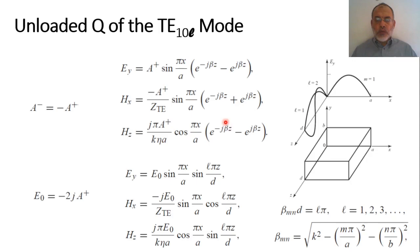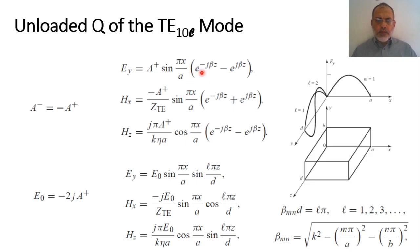For the closed rectangular cavity, the amplitude of the reflected field A⁻ equals −A⁺. This form can be simplified because e^(−jβz) − e^(+jβz) equals −2j sin(βz), so we replace that part by −2j sin(βz).